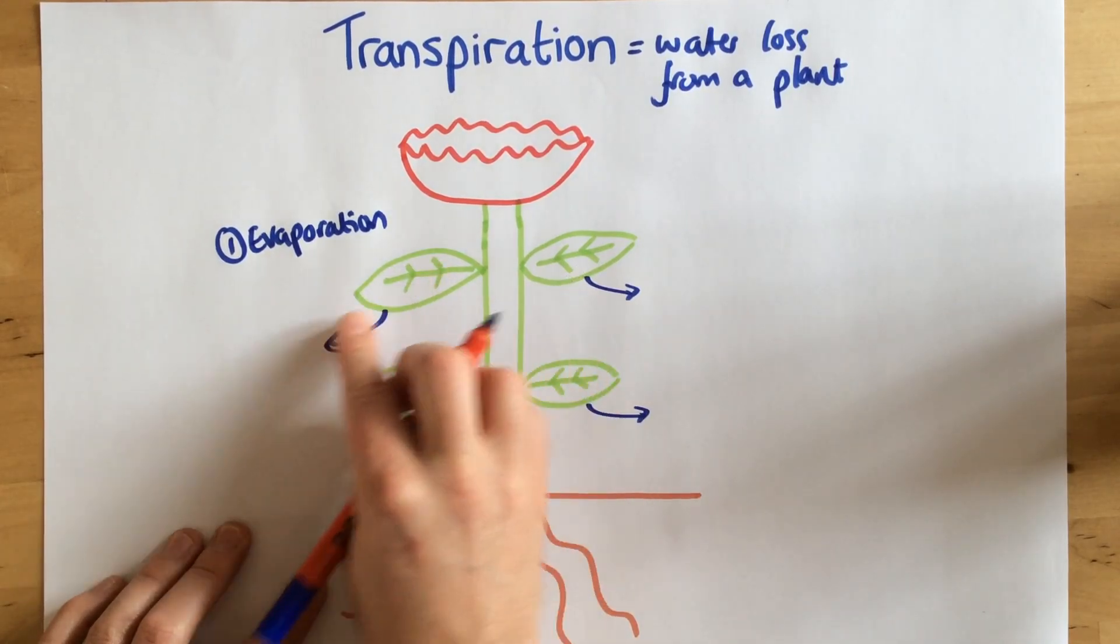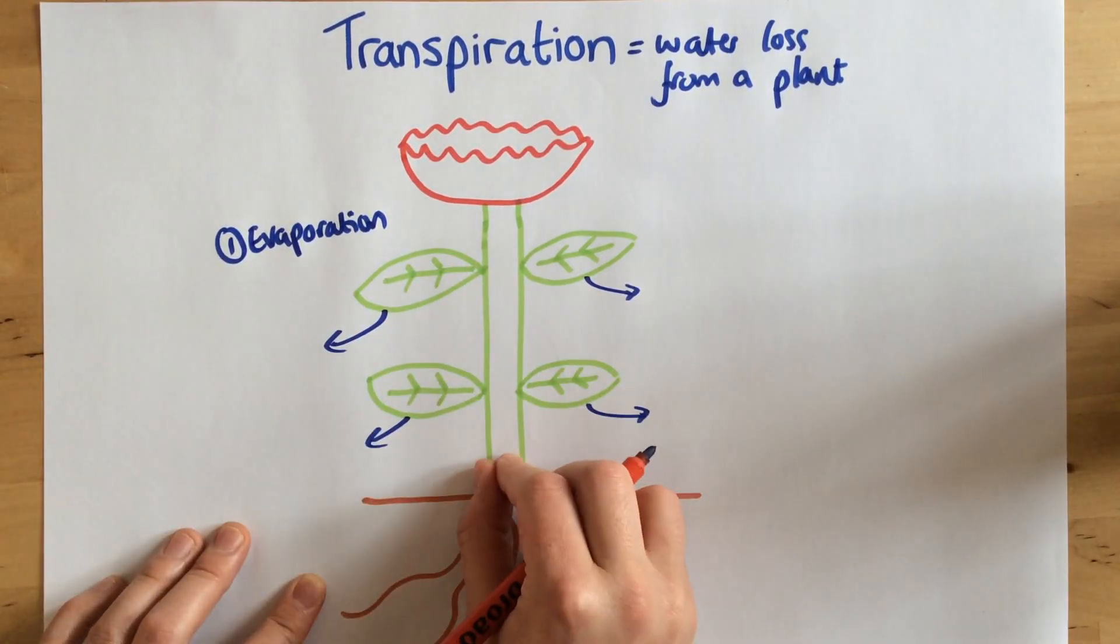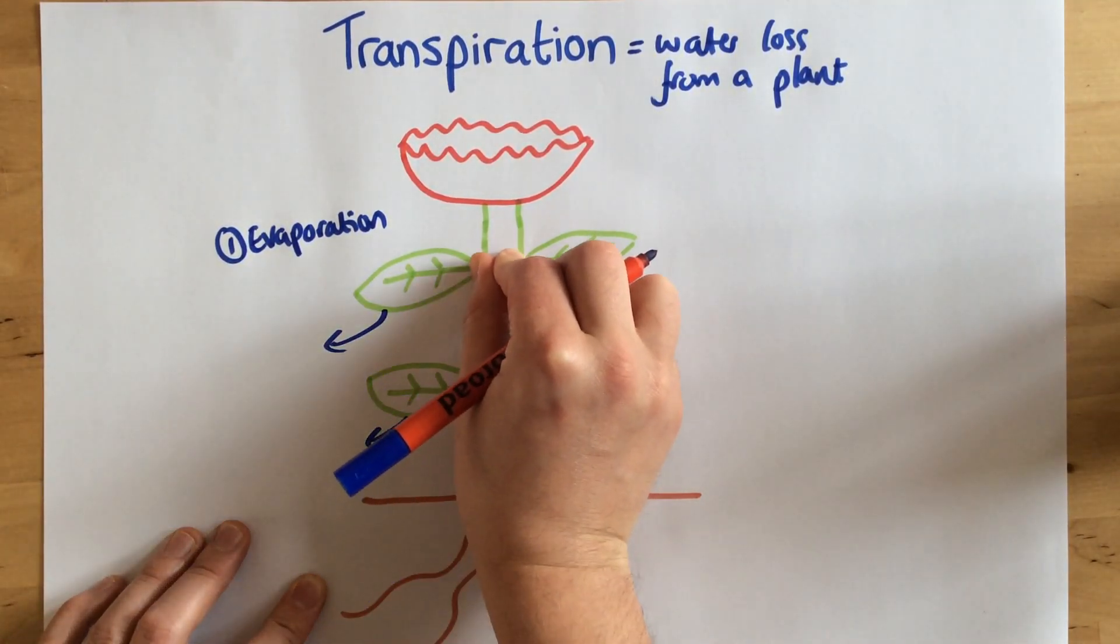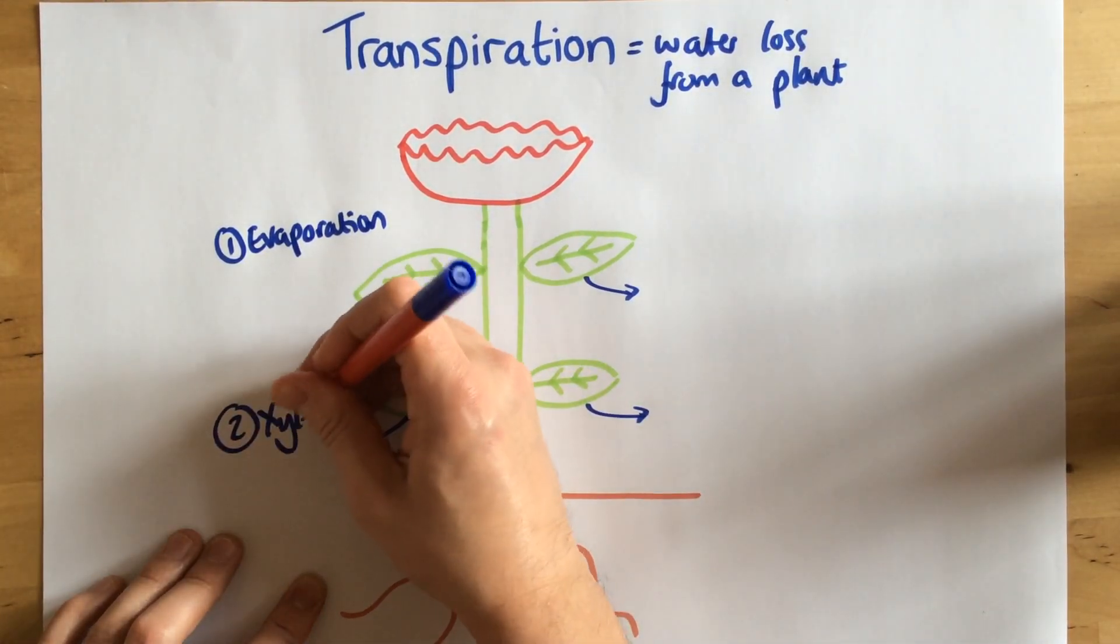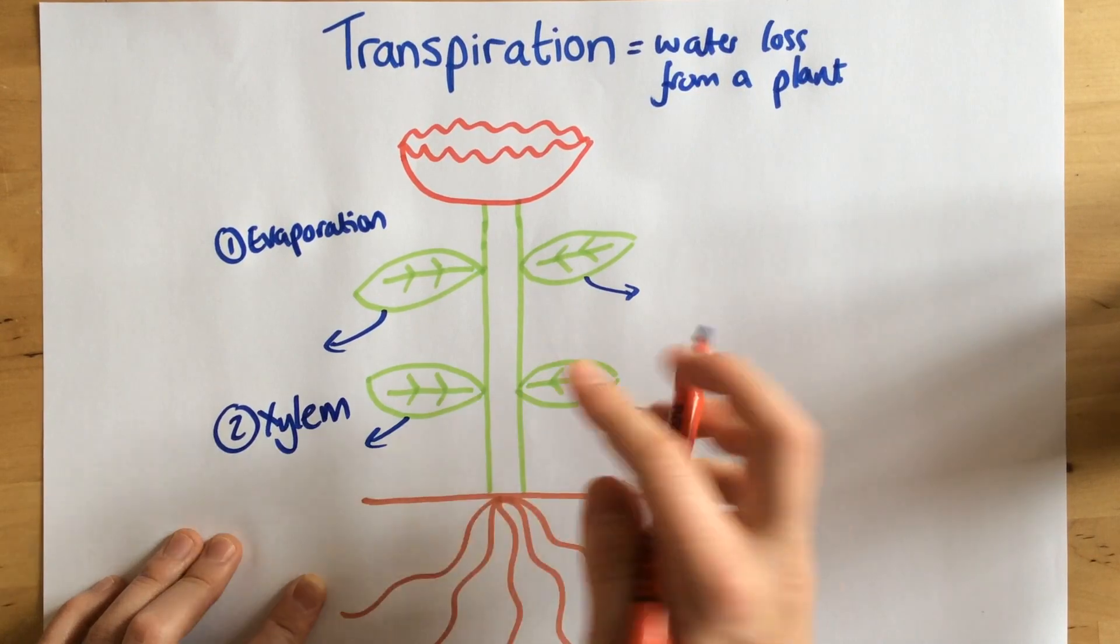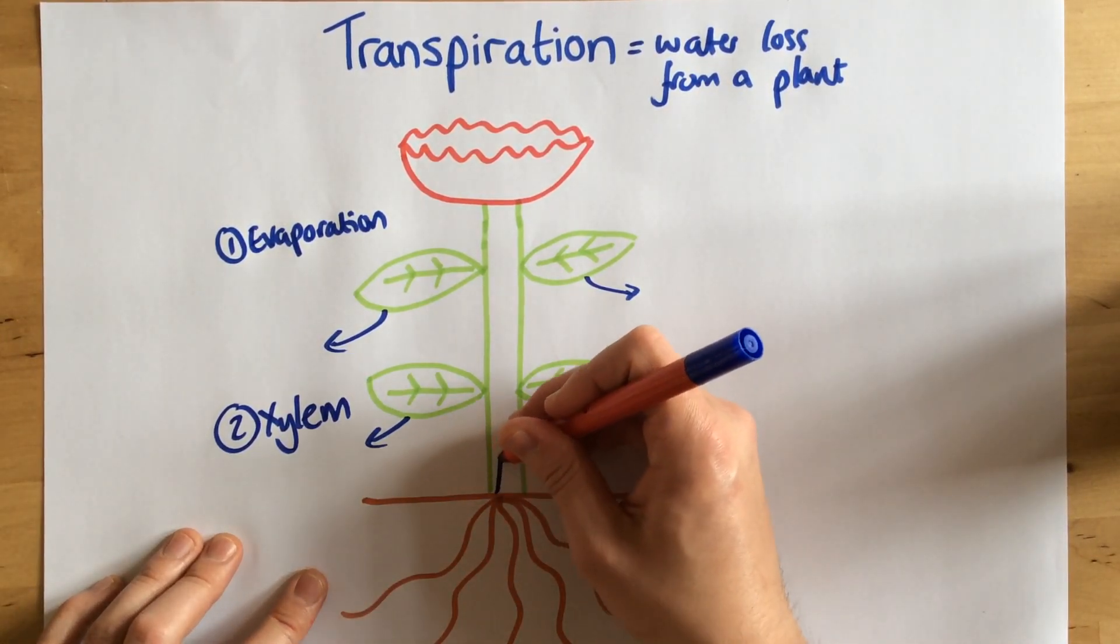Now as water is lost from the leaves, it causes water to be drawn up through tubes called xylem to replace the water lost from leaves. So I'll just show that right now.